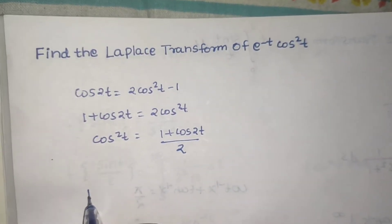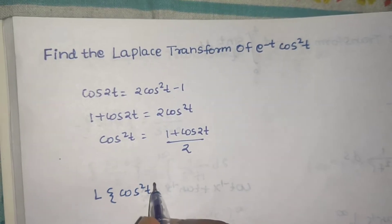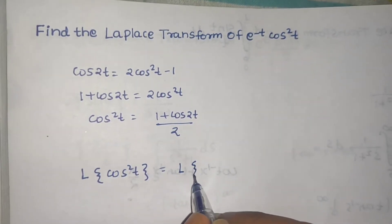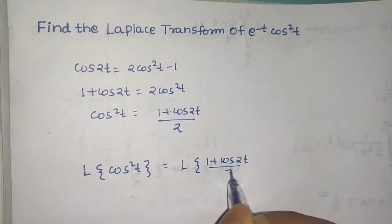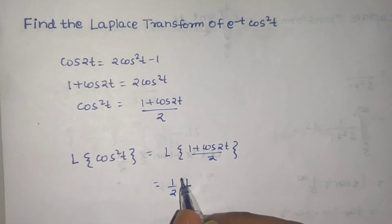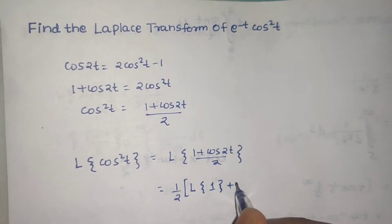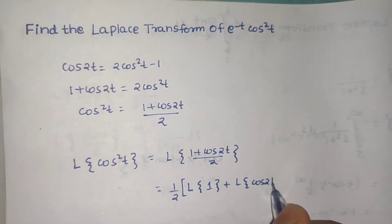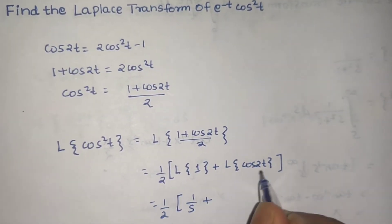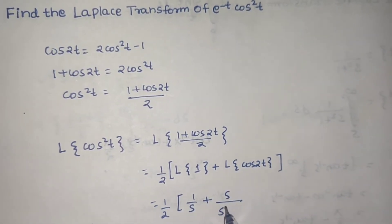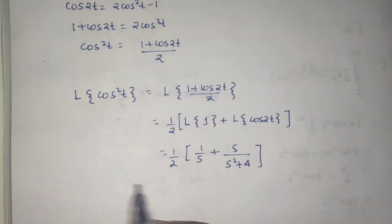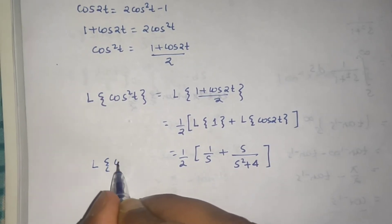So let's find the Laplace of cos squared t. This will be the Laplace of 1 plus cos 2t divided by 2. We can take the half out and break this as Laplace of 1 plus Laplace of cos 2t. We know that Laplace of 1 is simply 1 over s, and that of cos 2t is s divided by s squared plus a squared, where a equals 2. This was the Laplace of simply cos squared t.